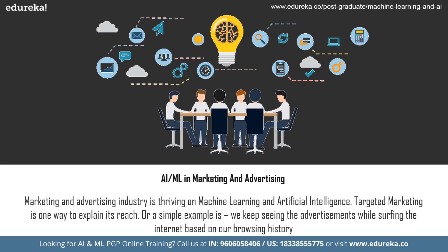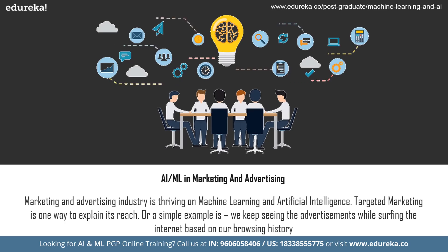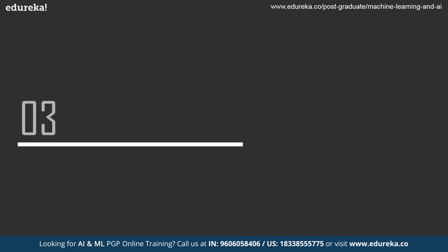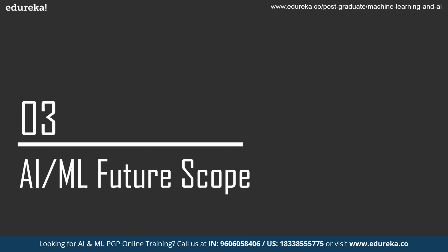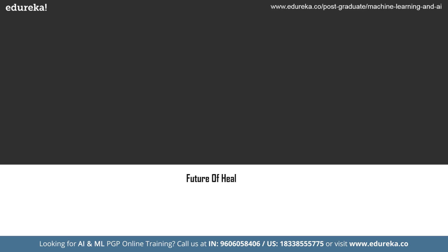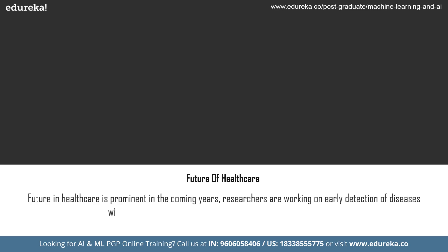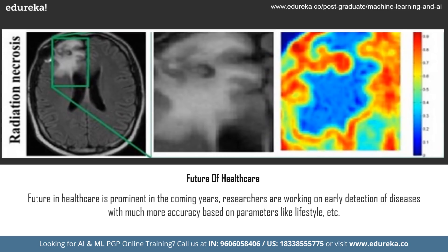Now that we have talked about current applications, let us talk about how AI and ML will shape up in the future, maybe 10 or 20 years from now. We will stick to the realistic possibilities. When we talk about the future of healthcare, it would seem pretty reachable and advanced. Even now researchers are working on detecting diseases in early stages based on lifestyle and other relevant data. In the future we can expect more advancements in the psychological part as well, where we will be able to identify traits and warnings in early stages and work on it before it gets the better of us.